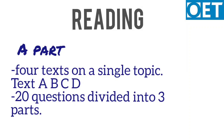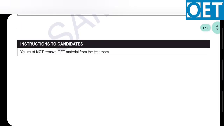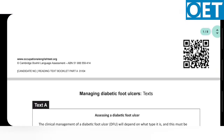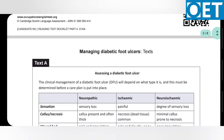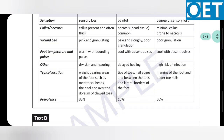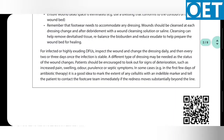Reading part A has four short texts on a single topic, marked as A, B, C, and D. You will answer 20 questions divided into three parts. This part is just like the comprehension exercises we did in childhood. For example, part A may have four texts on managing diabetic foot ulcers, and the answers to all 20 questions are within these texts.